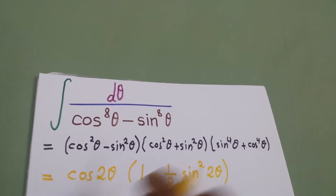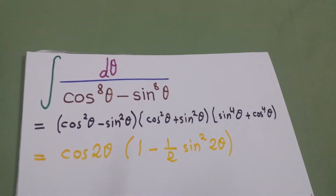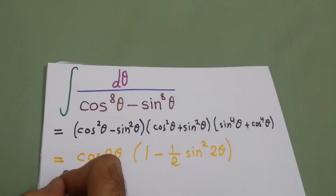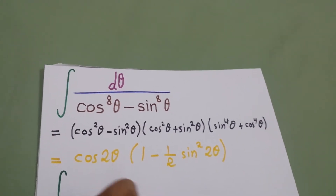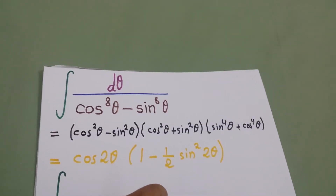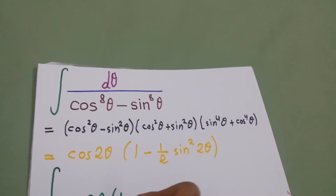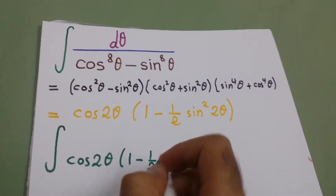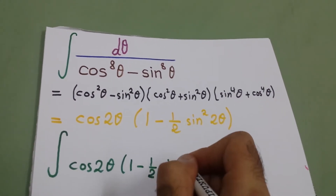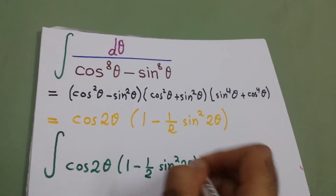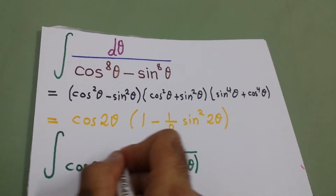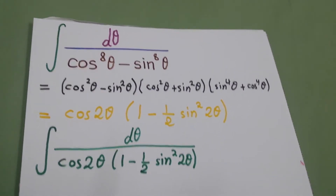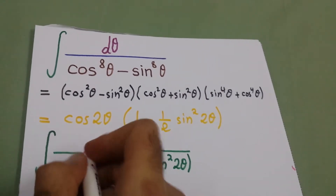So our integral will become the integral of cosine 2θ times 1 minus half sine squared 2θ, dθ. What we will do is multiply by cosine in both the numerator and denominator.